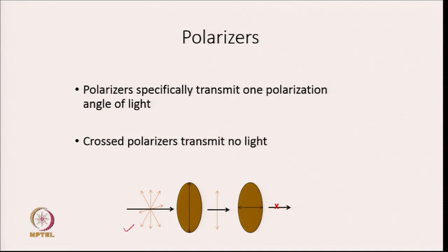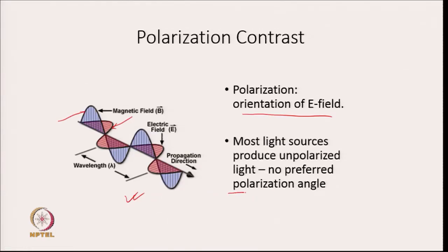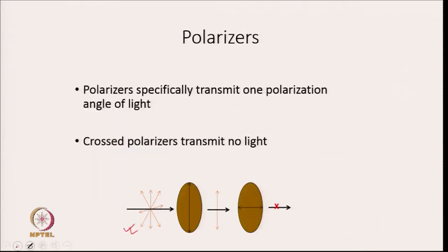If you take normal light, there is no preferred polarization angle — ordinary light is a mixture of polarized light at different angles. When you pass this through a polarizer, it will transmit only one polarization angle of light. For example, if I take a polarizer whose axis is vertical, it will only allow vertical light to pass through; other lights are blocked.